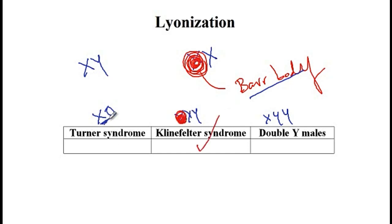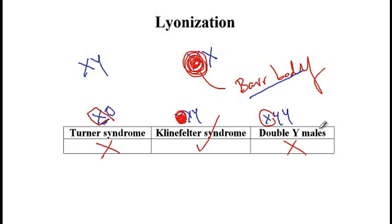Turner syndrome, however, has only one X chromosome and thus it cannot be inactivated — so there is no Barr body in Turner syndrome. In double Y males, there is again only one X chromosome, so there is no Barr body in double Y males either. That concludes our discussion.